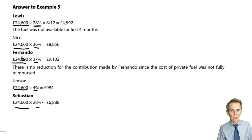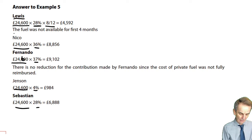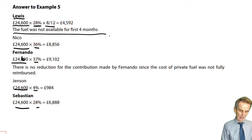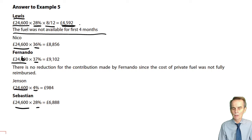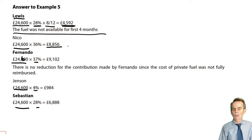Lewis had only had provision of that car for eight months of the tax year, so we time-apportion accordingly — eight months' worth of benefit. Like the car benefit, that figure is included in the overall employment income assessment for the income tax computation. Nico had a full year, so the full 36% of £24,600 gives £8,856 as the fuel benefit.